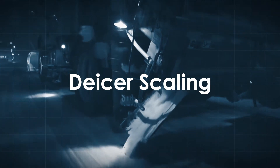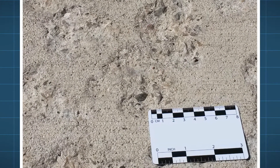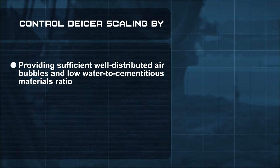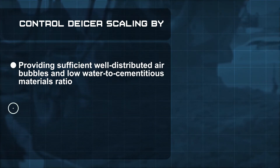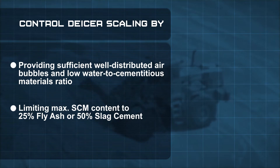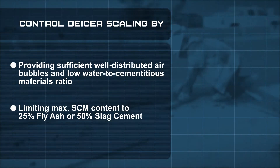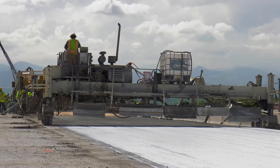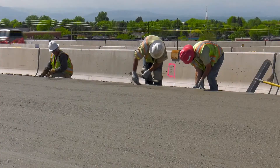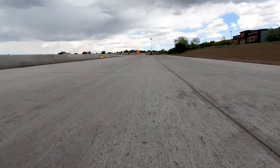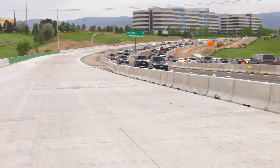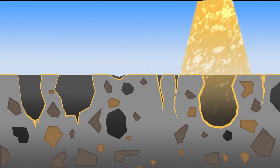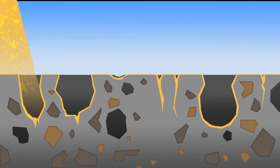Application of chemical de-icers can lead to surface scaling by amplifying the freeze-thaw deterioration at the surface of the concrete. In addition to providing sufficient well-distributed air bubbles and lower water to cementitious materials ratio to control scaling, the supplementary cementitious materials or SCM content should be limited to a maximum of 25 percent fly ash or 50 percent slag cement for hand-finished concrete. For maximum resistance to de-icer scaling, concrete surface finishing activities must be kept to a minimum and good curing practices must be followed. Agencies should also consider providing a minimum 30-day drying period after curing and before allowing the use of de-icers. Some agencies require a silane sealer on flatwork concrete at the end of construction to provide additional protection through its first winter.